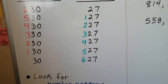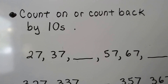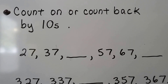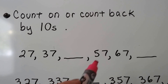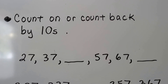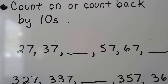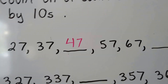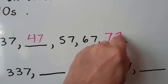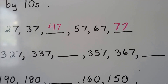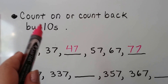We can look for number patterns to help us figure out what is a hundred more or less, or ten more or ten less. We can count on or count back by tens by looking at the tens place. We have two tens, three tens, then a missing number, then five tens, six tens. Is this counting on and getting bigger, or counting back and getting smaller? It's getting bigger — going from two to three — so the missing ten would be four tens and seven ones.